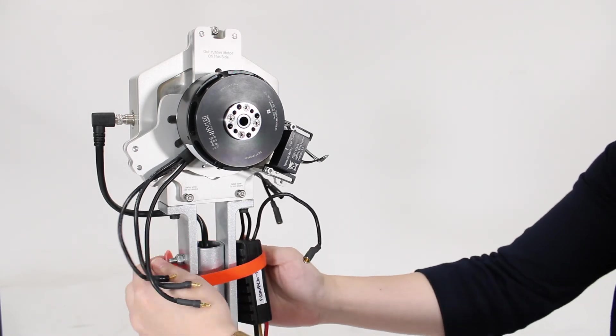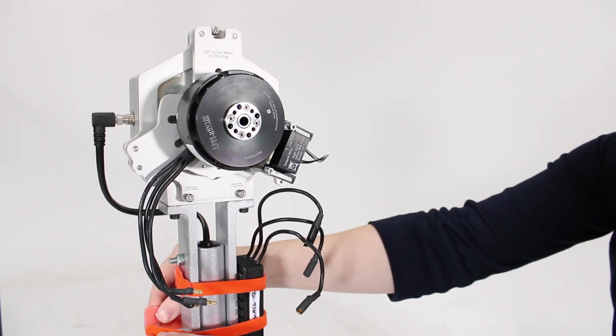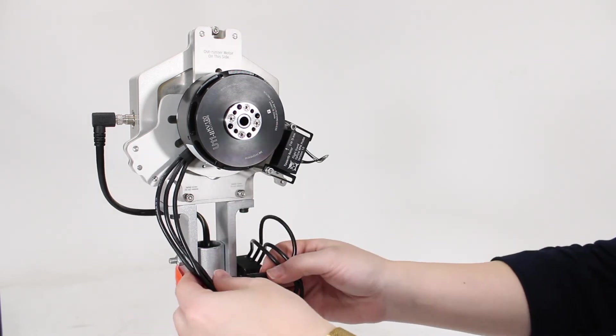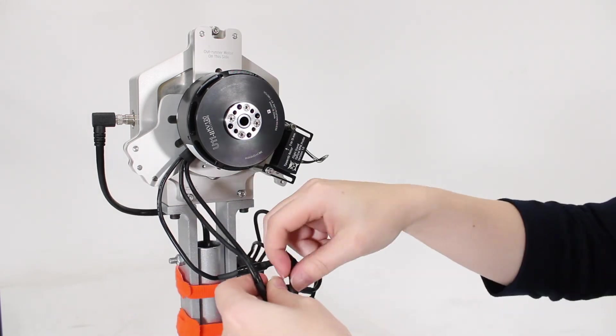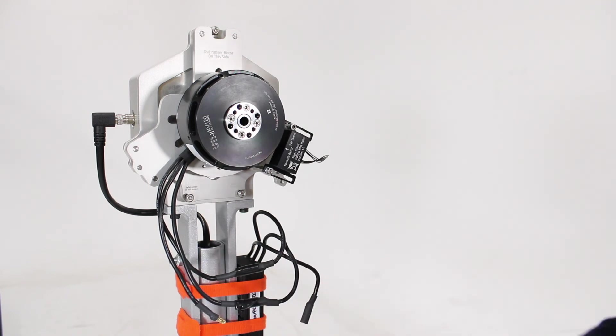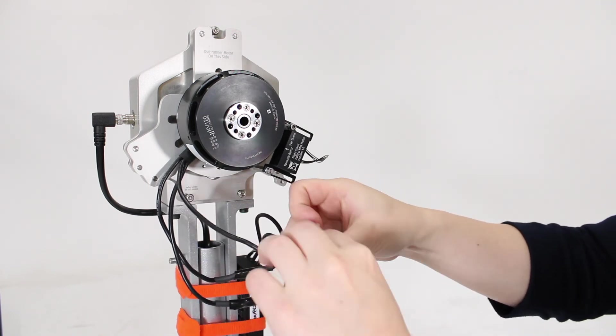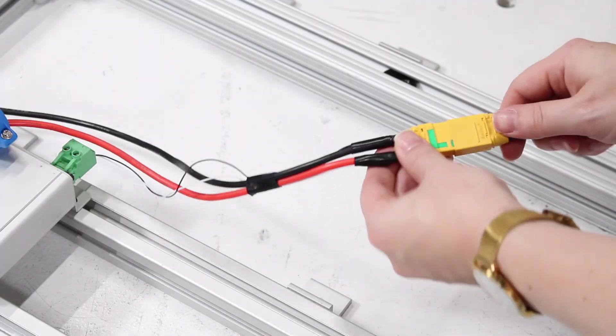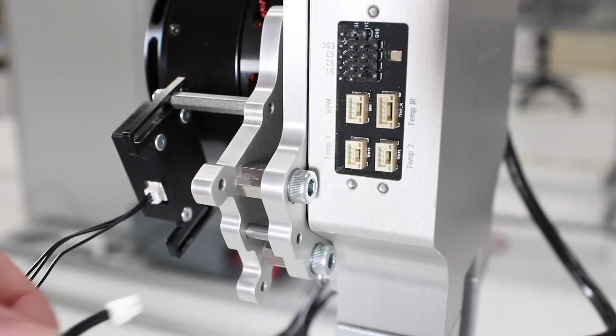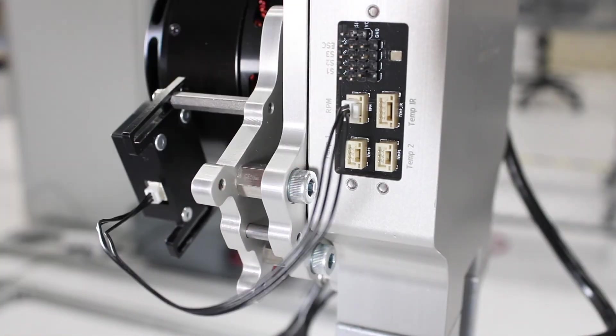Next you can attach your ESC to the stand with the tariffs provided, or your own. Connect it between the power source and the motor, so we're plugging it into the three wires of the motor, and then connect it to the power source, and this is also a good time to connect your RPM probe and temperature probes.